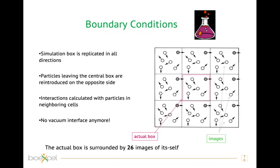The environment at the wall would be very different from the molecule's environment inside a beaker in an experiment. So we use periodic boundary conditions. Our central box, shown in red in the picture, is surrounded by 26 images of itself. If a particle exits on the right side of the box, it re-enters on the left side, and we always account for interactions with neighboring particles regardless of which side of the box they are on.